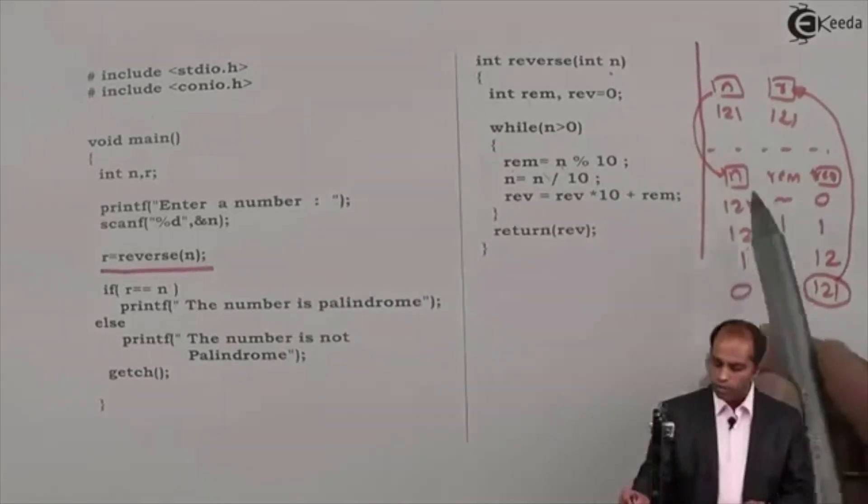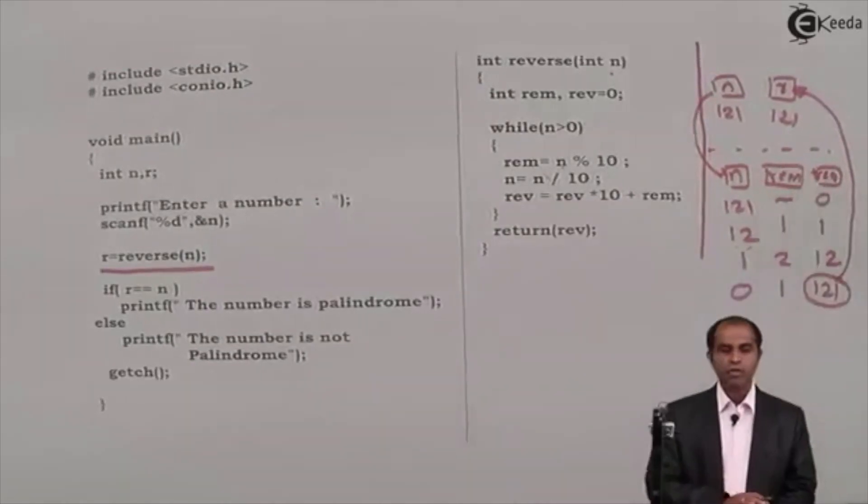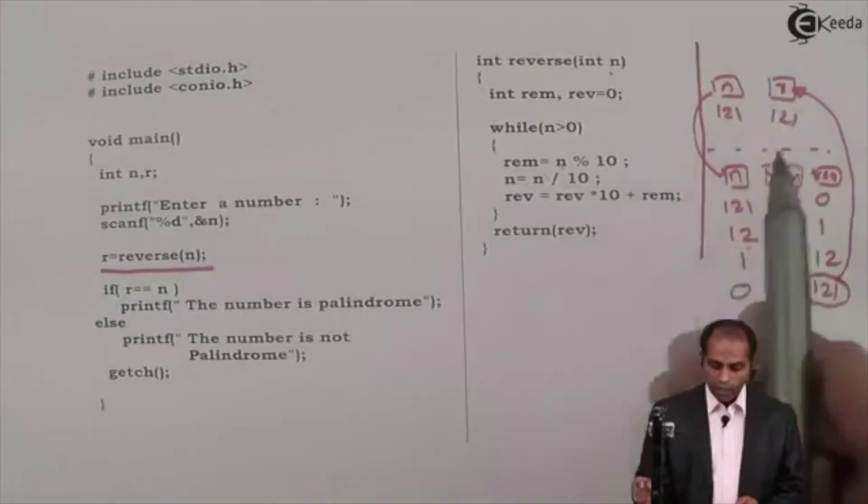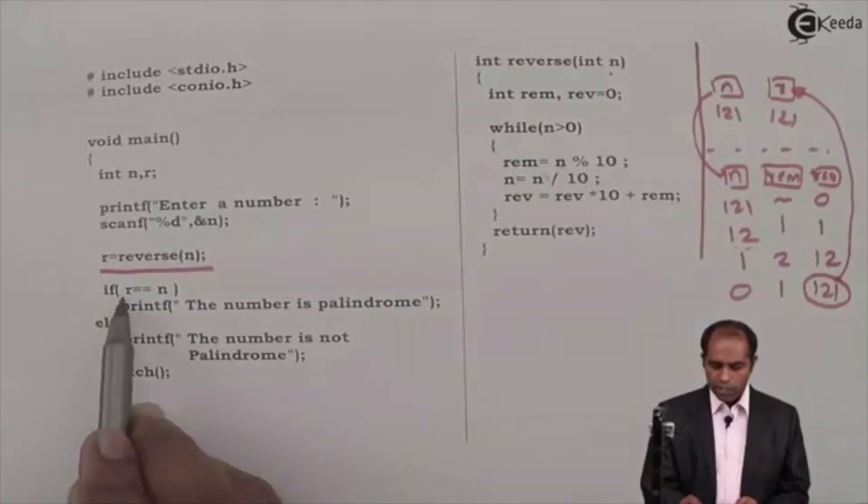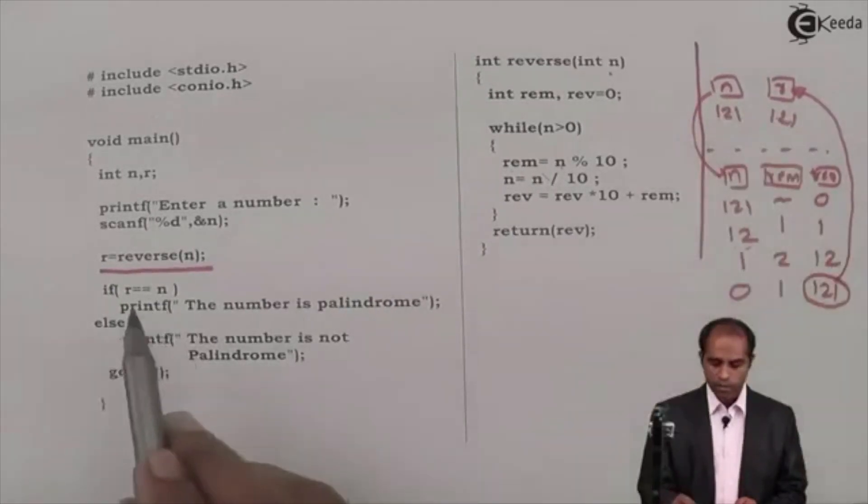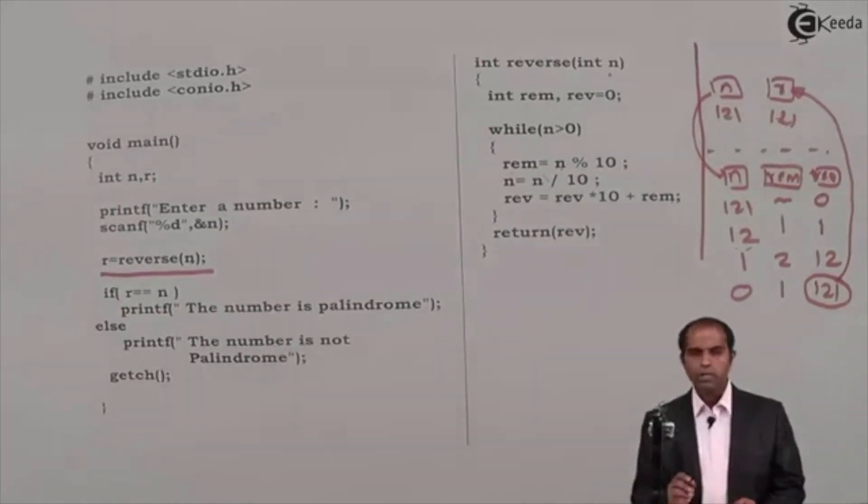So n, remainder rem and reverse rev are destroyed. When all these variables are destroyed you will find that the reverse is r. And here I will compare is my reverse, that is r, is it matching with n? Yes, 121 is same as 121. So it means that the number is palindrome. Else the number is not palindrome.